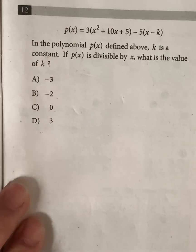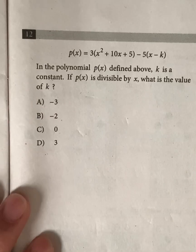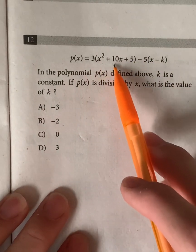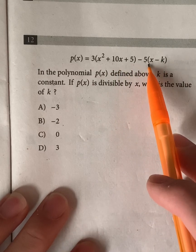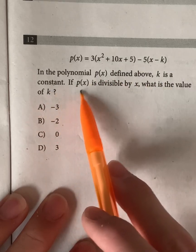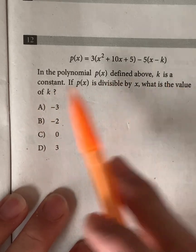Moving on, let's go to question 12. So p of x is equal to 3 times x squared plus 10x plus 5 minus 5x minus k. In the polynomial p of x defined above, k is a constant. If p of x is divisible by x, what is the value of k?